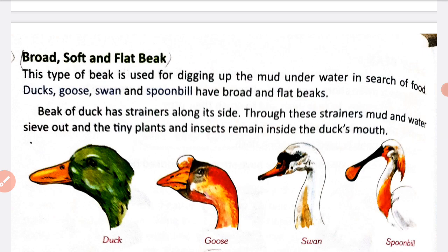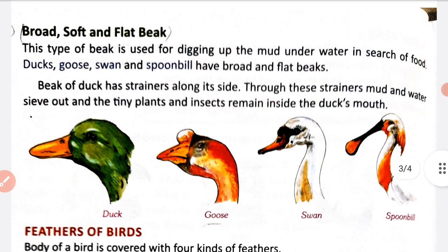Ducks, geese, swan and spoonbill have a broad and flat beak. Inki beak soft hoti hai lekin broad and flat bhi hoti hai. Duck ki beak mein ek specialty hoti hai - the beak of a duck has strainers along its side. Through these strainers, mud and water sieve out, and tiny plants and insects remain inside the duck's mouth as food. Jab duck underwater mein apne khane ke liye insect ya plant ko apne beak se pakadti hai, to uske saath mud and water bhi aa jata hai.